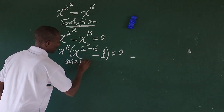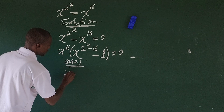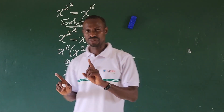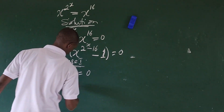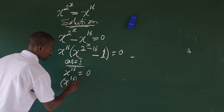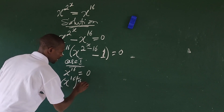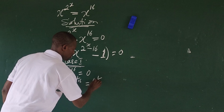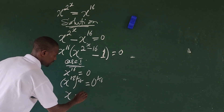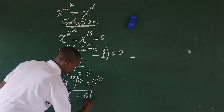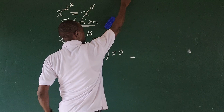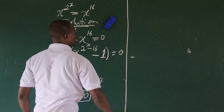For Case 1, we have x to the power of 16 equal to zero. Taking the 16th root of both sides: x to the power of 16, raised to 1 over 16, equals zero raised to 1 over 16. This leaves us with x equals zero. So zero is the first root of x in this challenge.